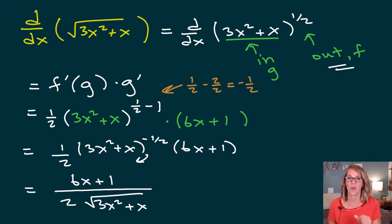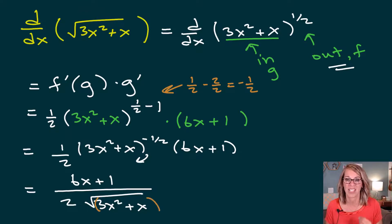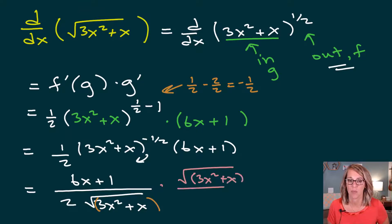This is one form of the answer, but I want to rationalize this one. In order to rationalize, I need the quantity on the inside to be squared. So I'm going to multiply by another radical — the square root of 3x squared plus x — top and bottom, so I keep this fraction balanced.